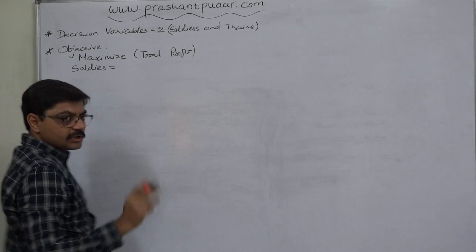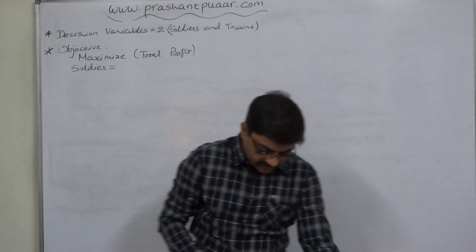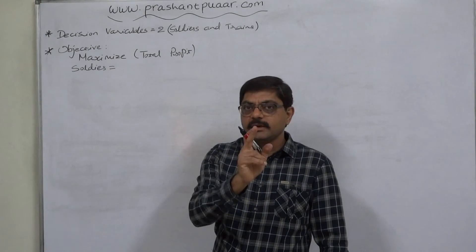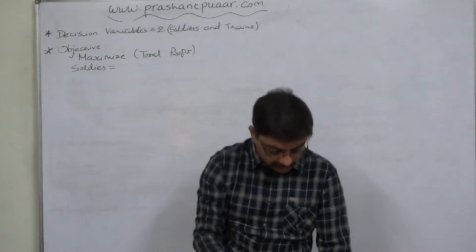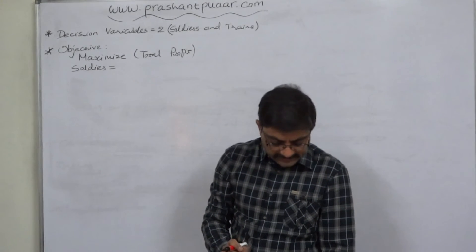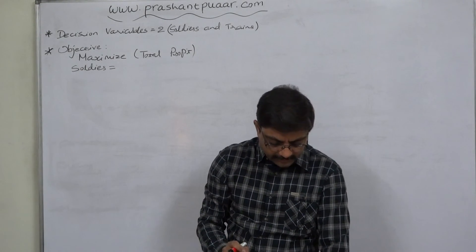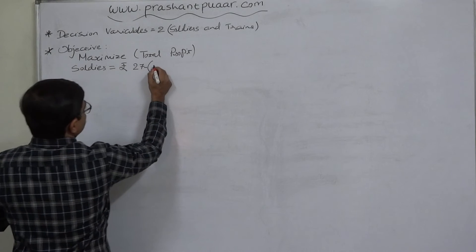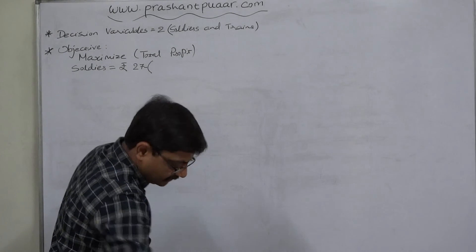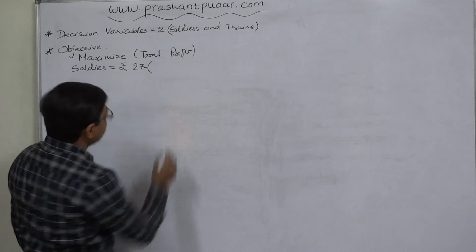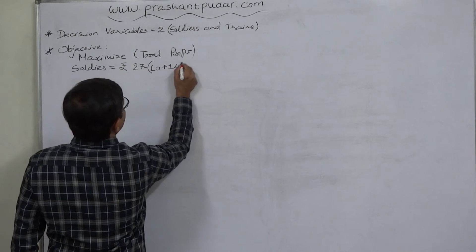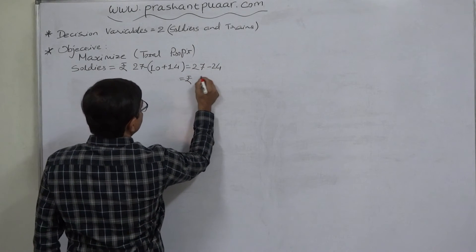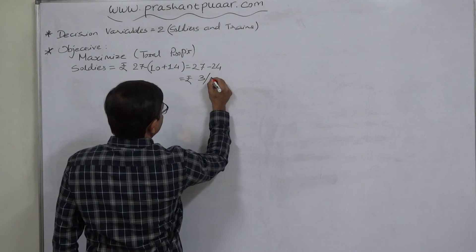There is no direct mention of profit per unit, but from the data: each soldier sells for rupees 27. It uses rupees 10 of raw materials and takes rupees 14 of labor and overhead cost. So profit = selling price minus cost = 27 minus (10 + 14) = 27 minus 24 = rupees 3 profit per soldier.